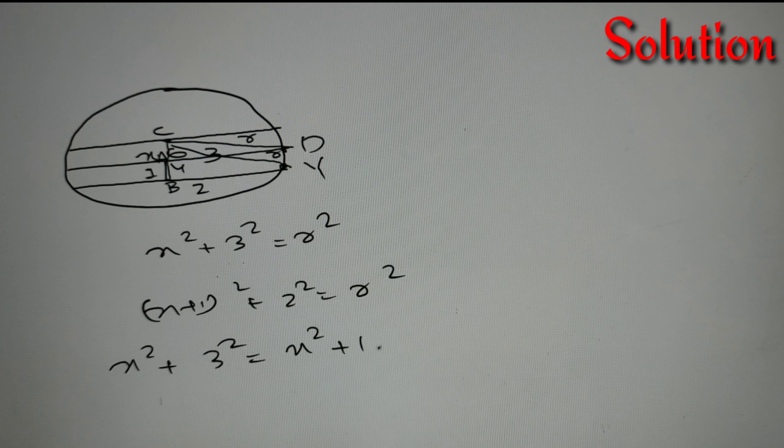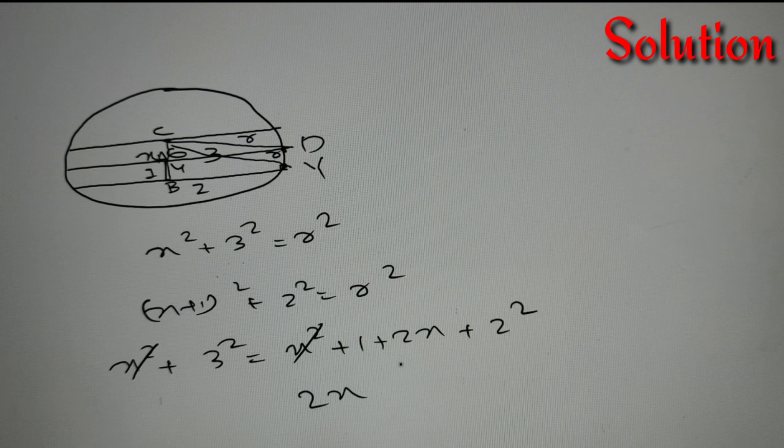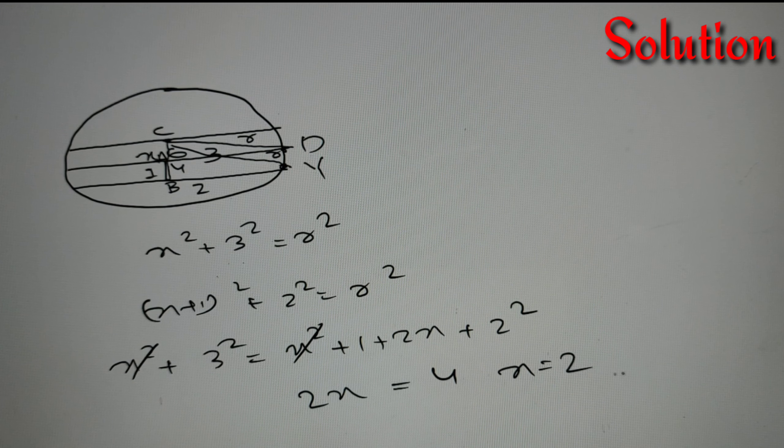or we can say that X² + 1 + 2X + 2². Now X² and X² will get cancelled and we'll get the value of 1 + 2X + 4 = 9 or I can say that 2X = 4 or X = 2.